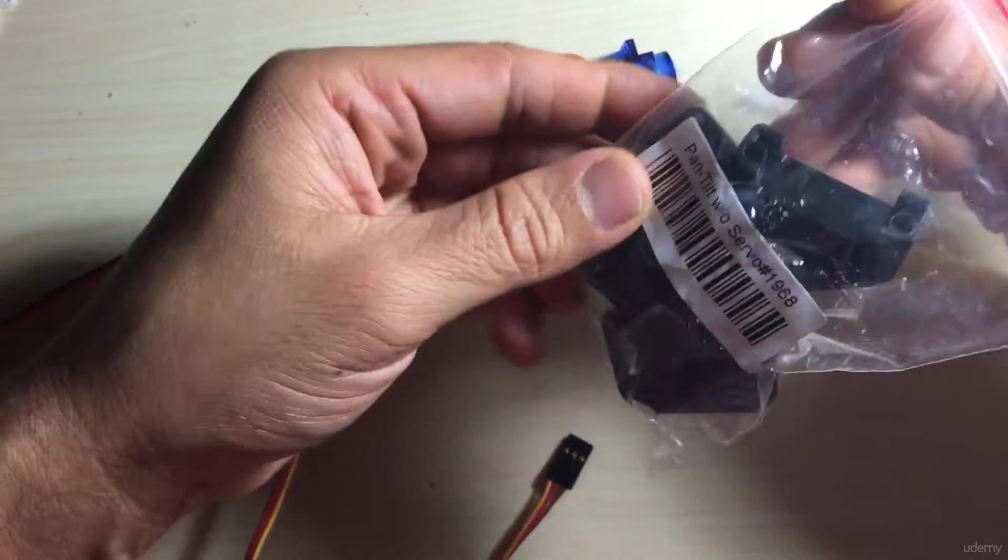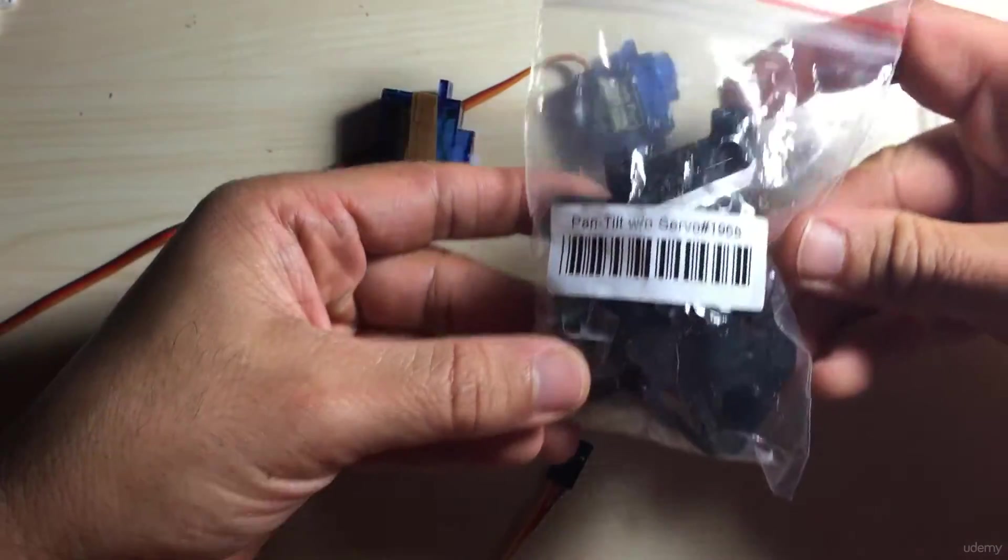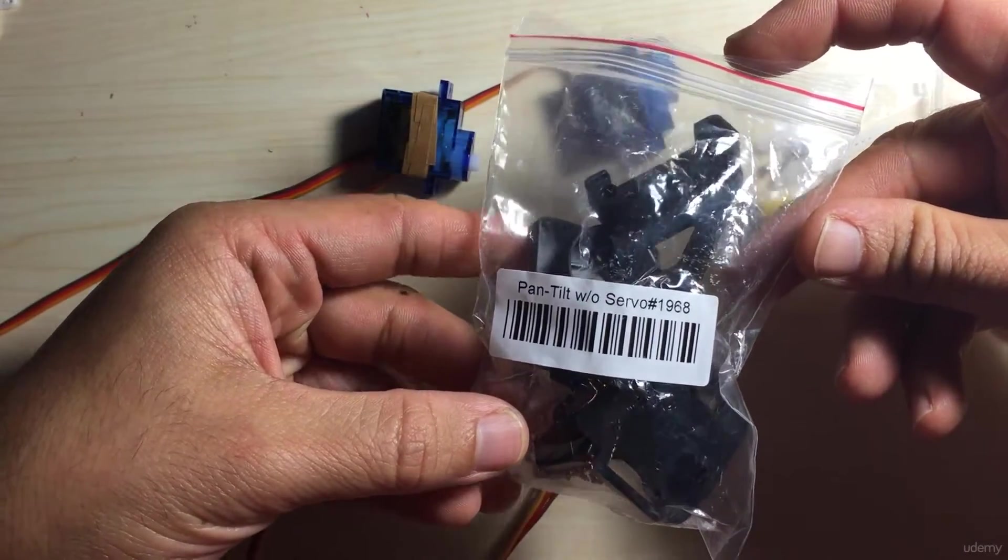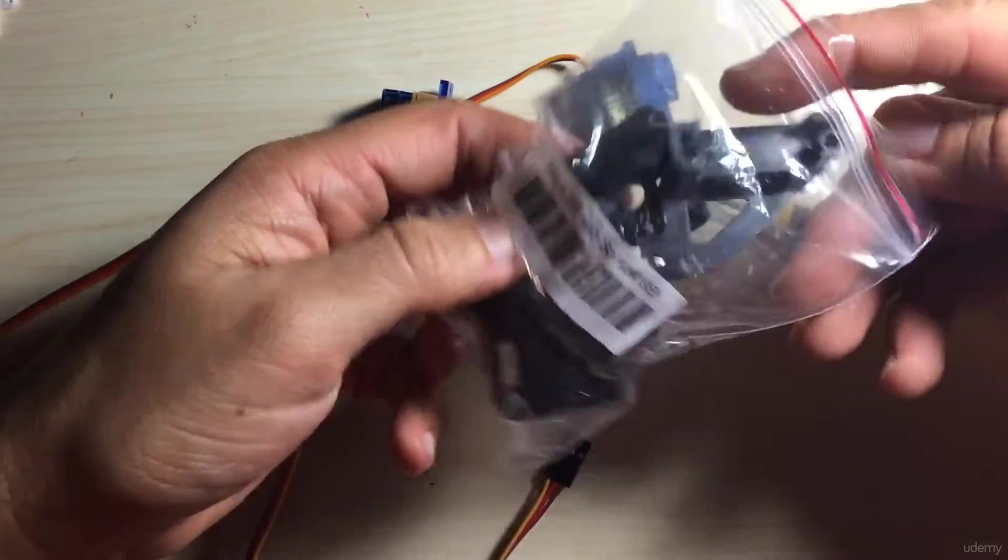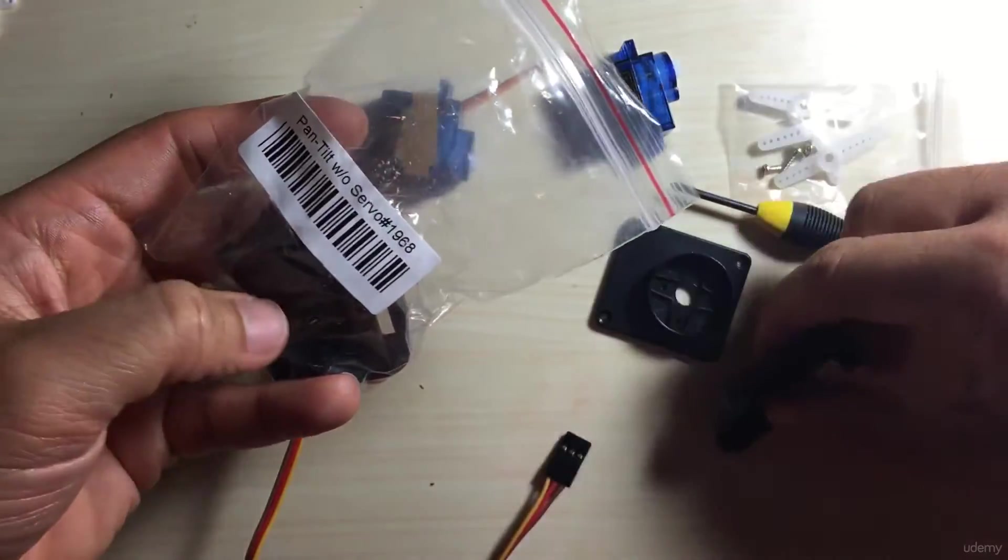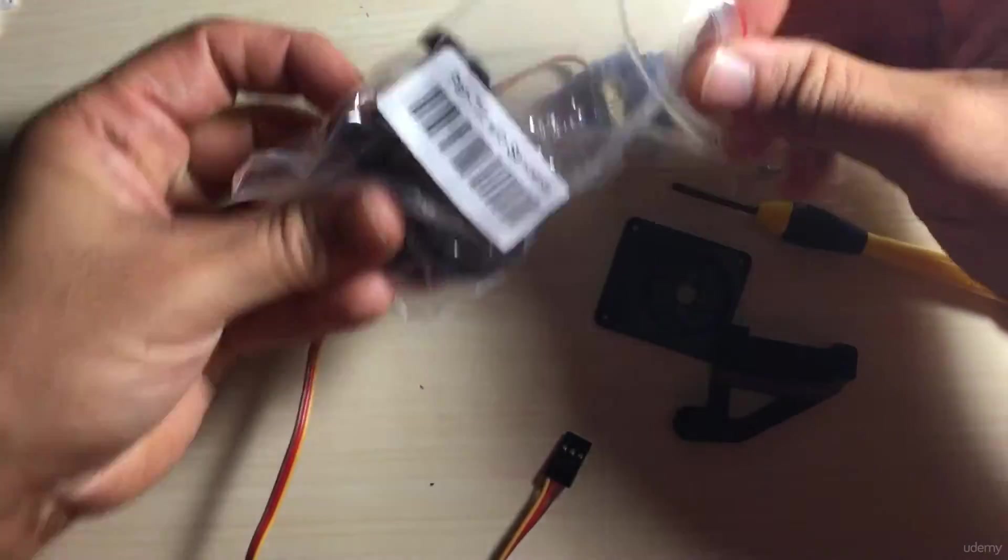Here is the pan tilt brackets that I got and I will post a link to these in the resources section of the video. It actually comes with four pieces that you'll need to put together.